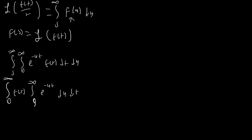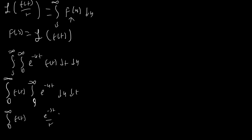Then we integrate, and we end up with zero to infinity of f(t) times negative e to the negative ut over t, evaluated from s to infinity. At infinity it disappears, and at s it becomes the normal Laplace transform. The negative sign disappears because we're subtracting it. And this is just the definition of the Laplace transform of f(t) over t, so this rule applies.